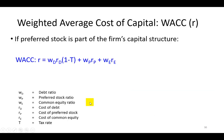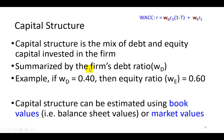If the firm has preferred stock, which is rare, then we're going to have to include the weighted components of the cost of preferred stock. The task ahead of us is to determine how we figure out WD and WE, which define the firm's capital structure — the mix of debt and equity capital invested in the firm.